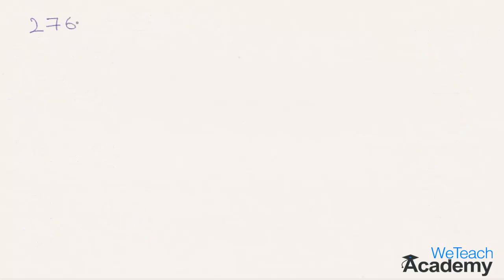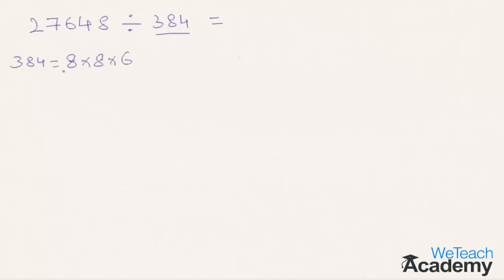Let us divide 27648 by 384. This seems to be a bigger number. The first step is to break the divisor, that is 384, into its factors. 384 can be broken into 8, 8, and 6. The next step is to divide 27648 by its first factor, that is 8.